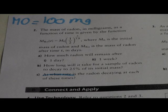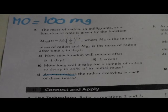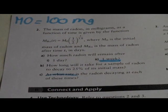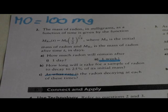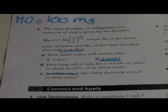One thing to look out for: make sure you do not confuse one week with a t value of 1. Since time is measured in days, one week is equal to 7 days, so t = 7.